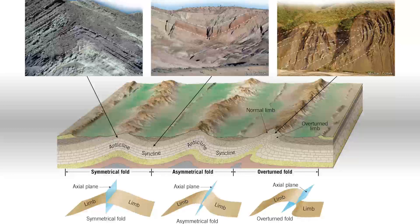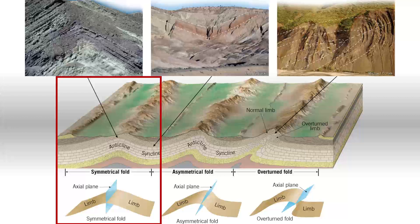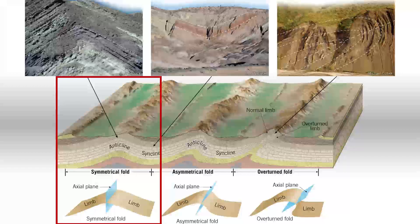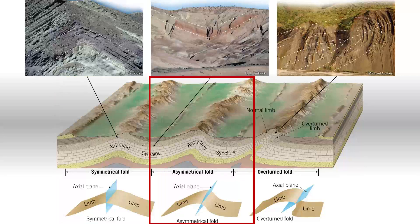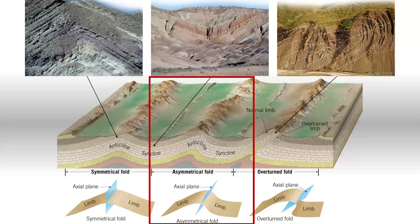Here we can see a bunch of different anticlines. Here is our familiar anticline where both limbs are at the same angle to the axis. This happens when the compressional stress is equal in both directions — in this case, from the right and the left. But if there's a bit more stress coming from one side, in this case the left, then the angles of the limbs will change and it will push that imaginary axis line to the right. This is called an asymmetrical fold.